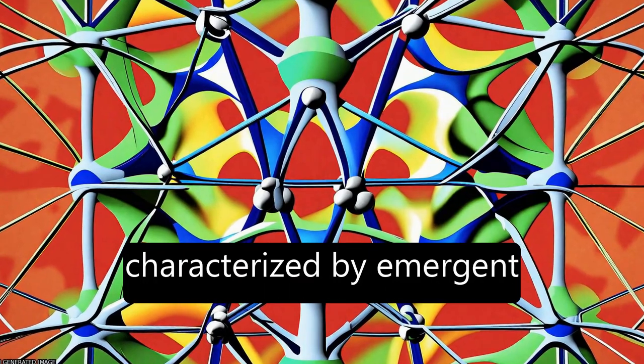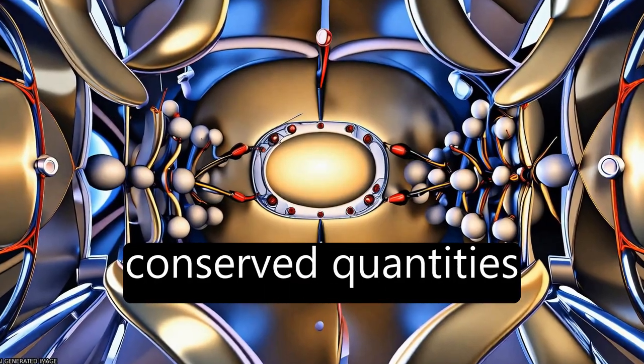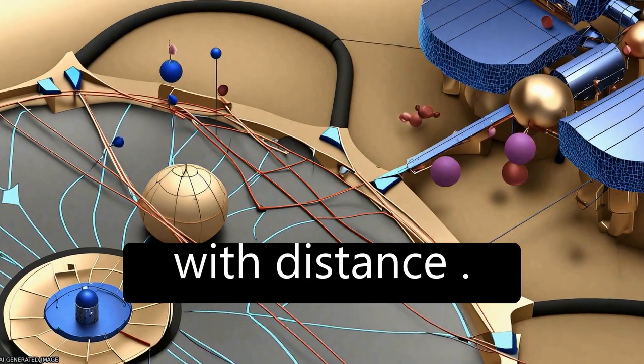The quasi-MBL phase is characterized by emergent conserved quantities which decay algebraically with distance.